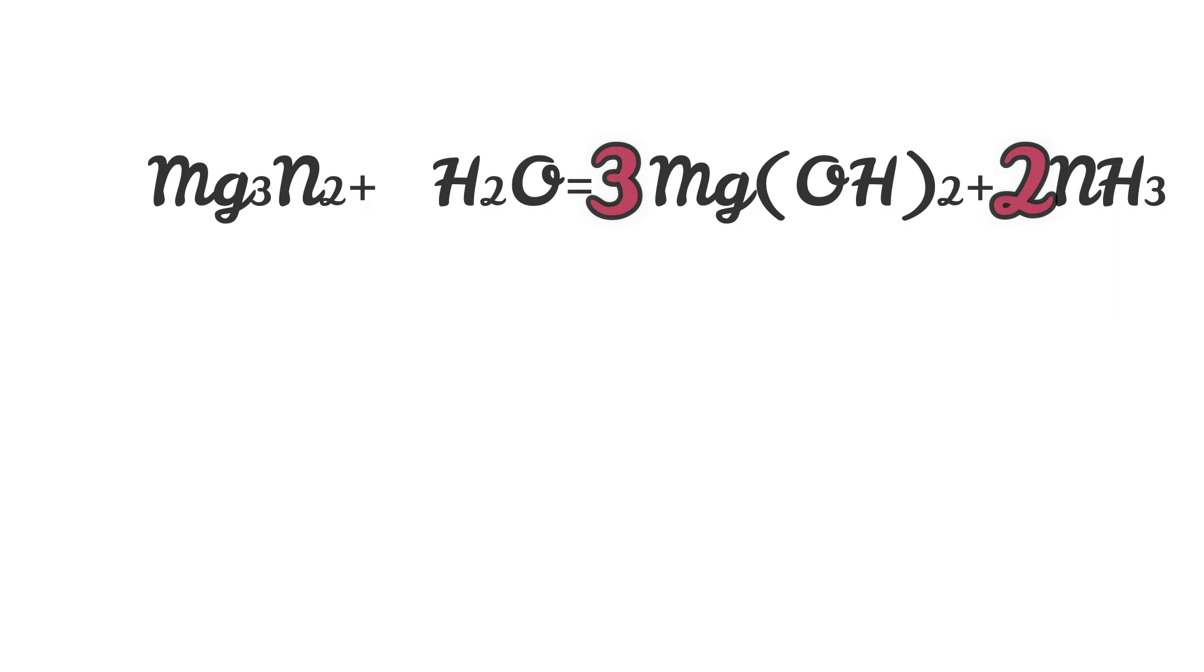Product 3Mg(OH)2 has three times two, or six oxygens, so we should write six in front of H2O to make oxygen balanced. Now let's check if step one and step two are still balanced. Well, magnesium and nitrogen both still seem to be balanced.